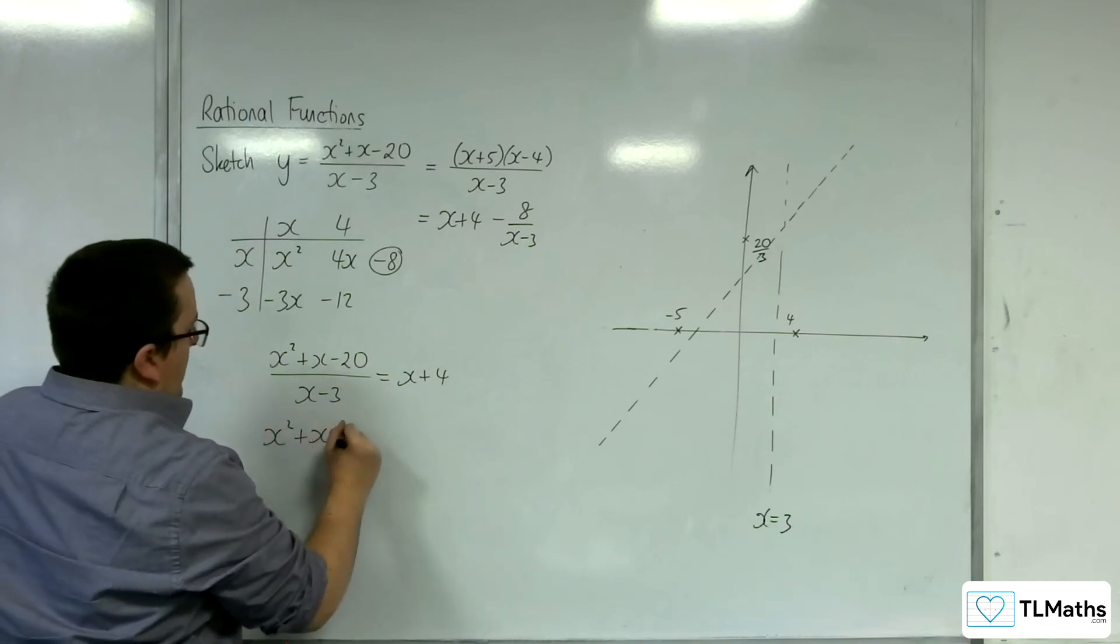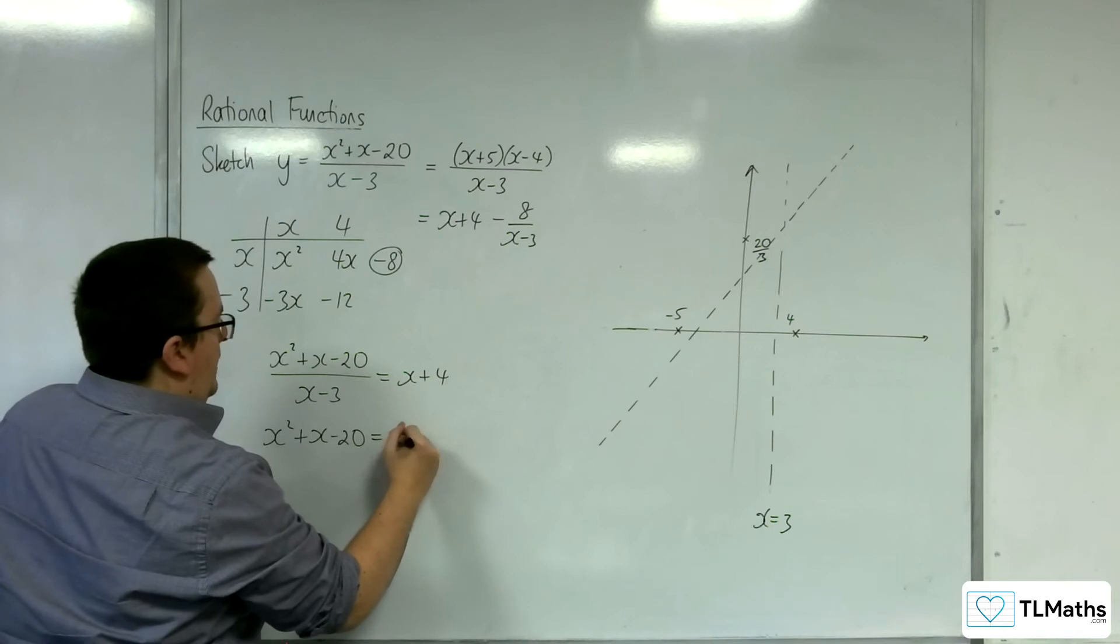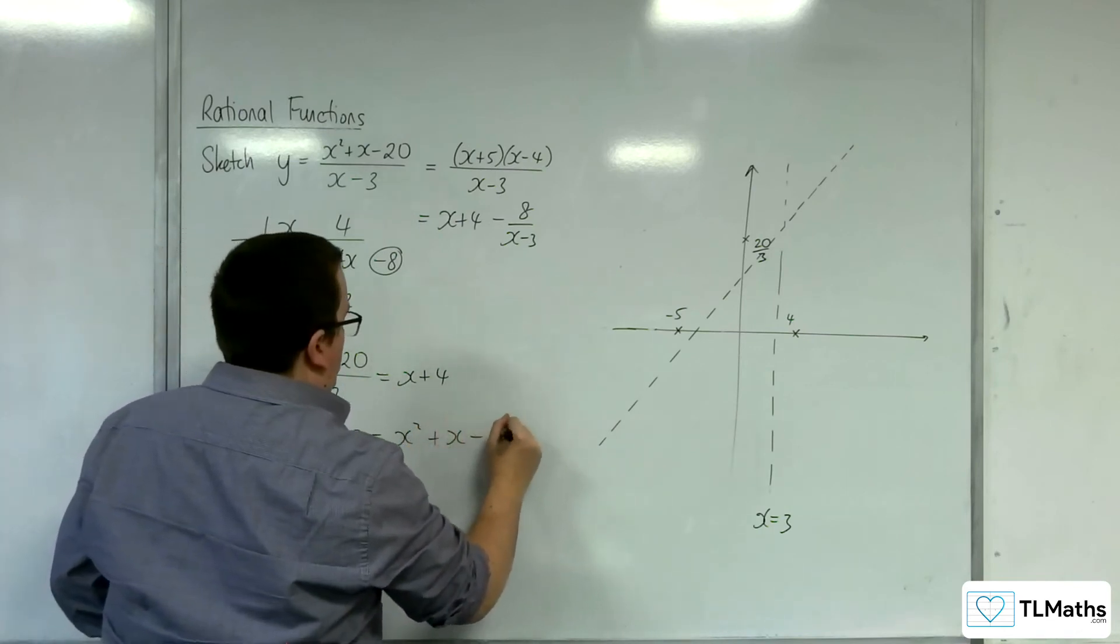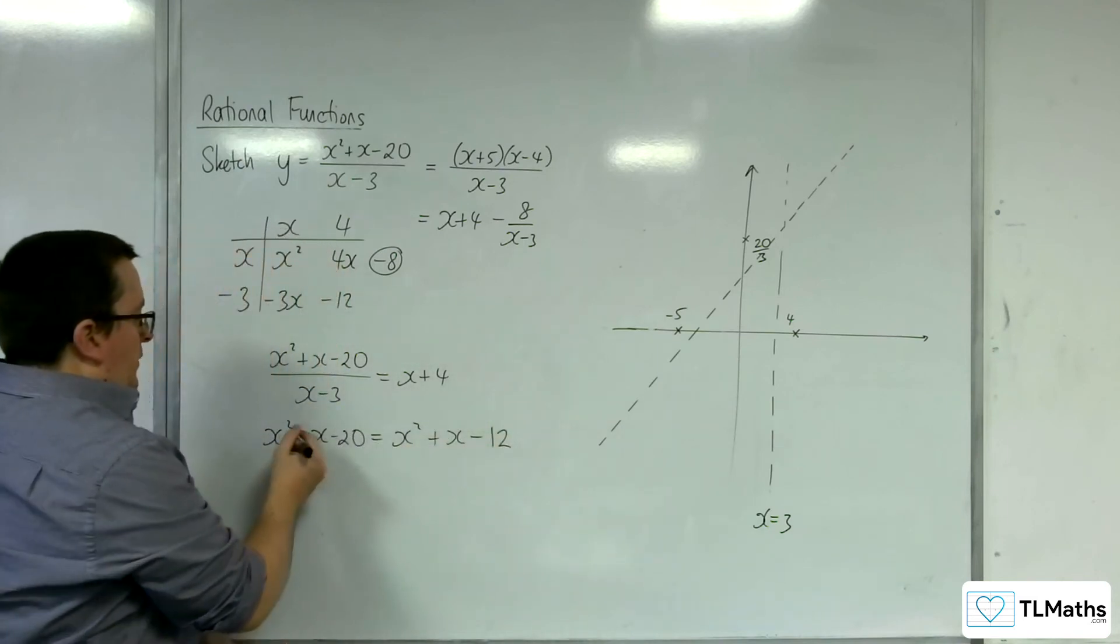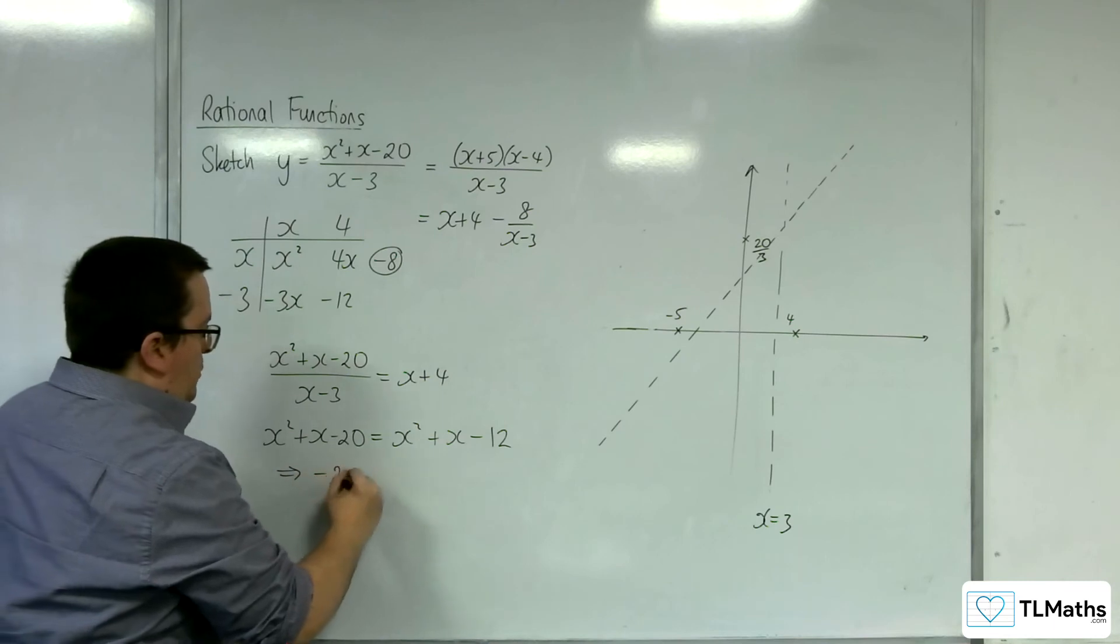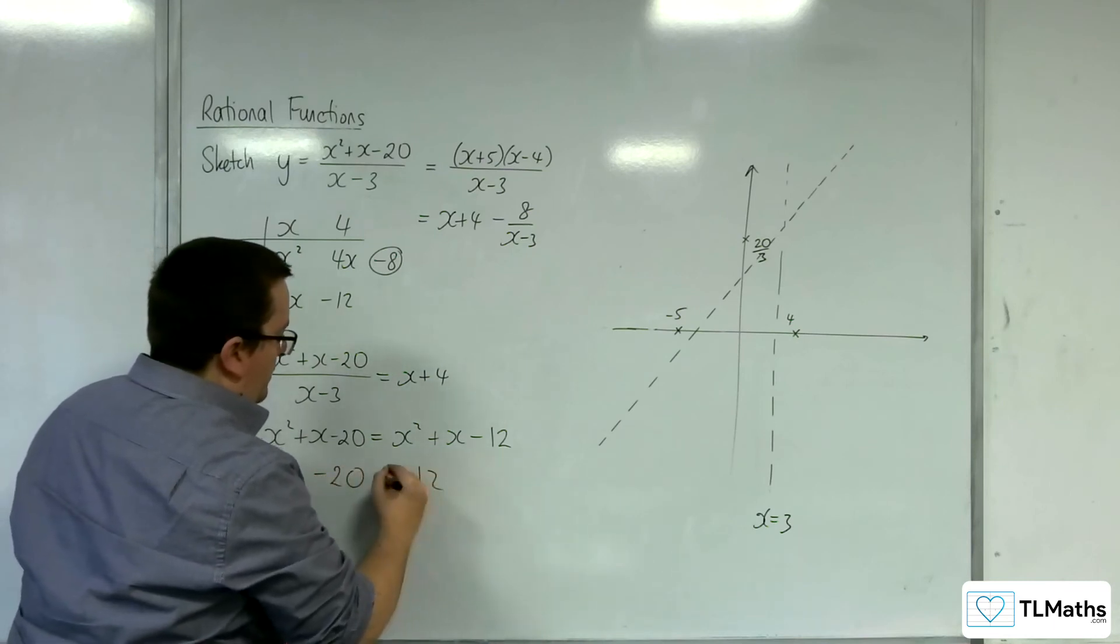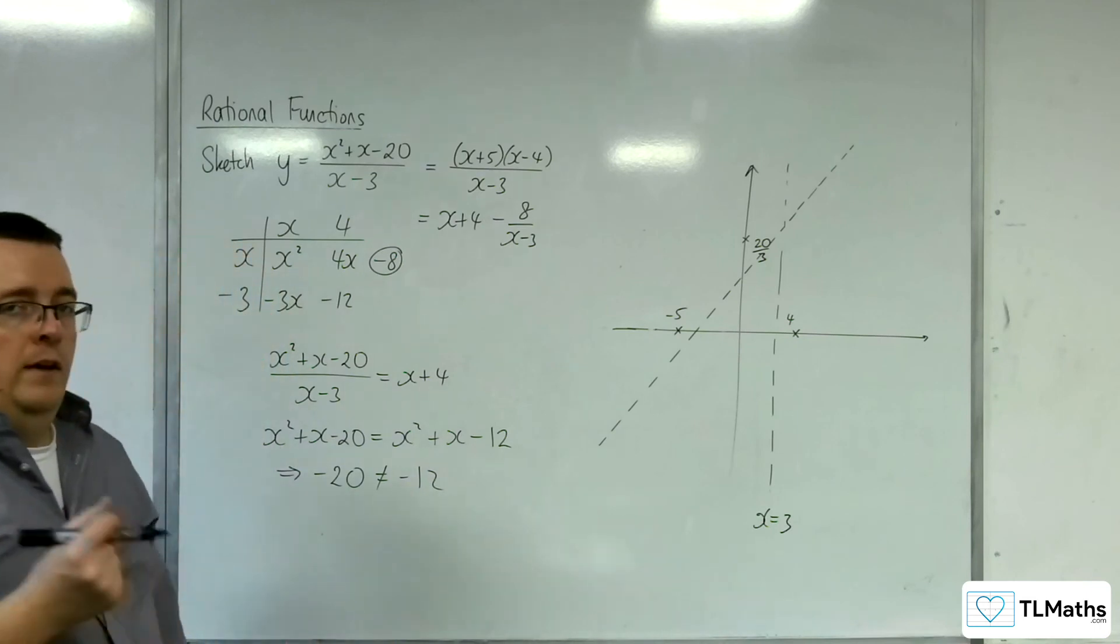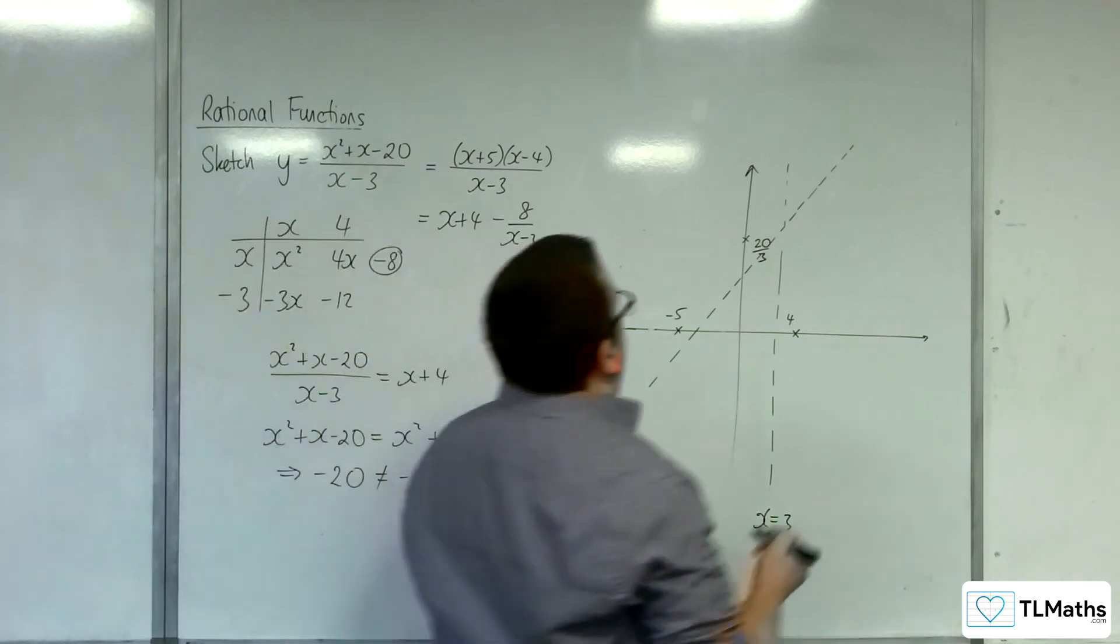...we have on the right-hand side, we're going to have x squared, minus 3x plus 4x, so plus x, minus 12. So, you can see the x squareds and the x's cancel, and that would mean that minus 20 is equal to minus 12, which is obviously nonsense. So, the curve does not cross the asymptote.